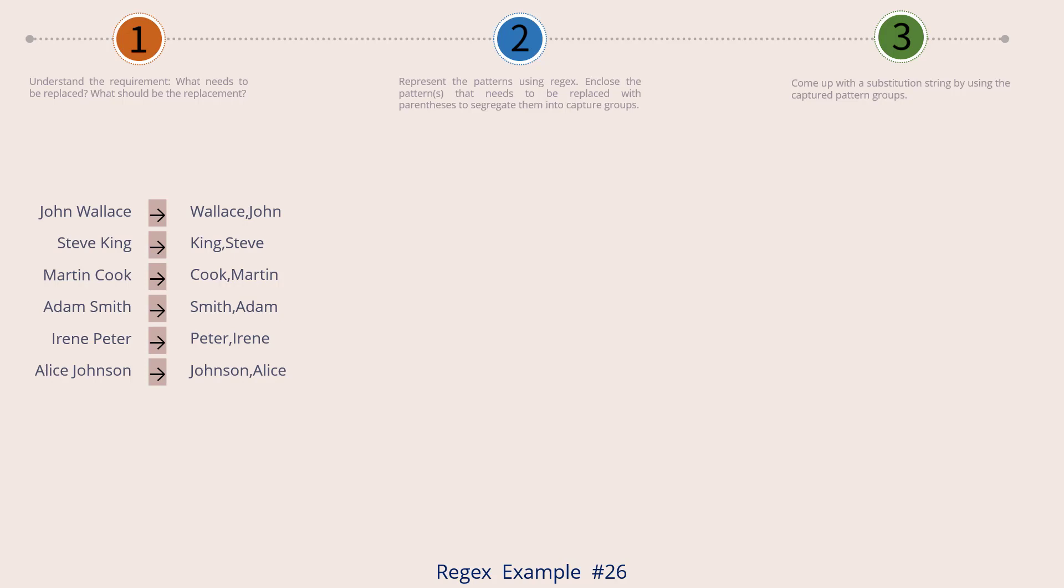So for John Wallace, the new string should be Wallace comma John, which is of the format last name comma first name. So we need to capture the first name from the input string and rearrange it as shown.